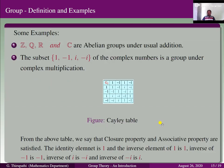Now go for some examples. The set of all integers, rational numbers, real numbers, and complex numbers are abelian groups under usual addition. The subset {1, -1, i, -i} of the complex numbers is a group under complex multiplication.